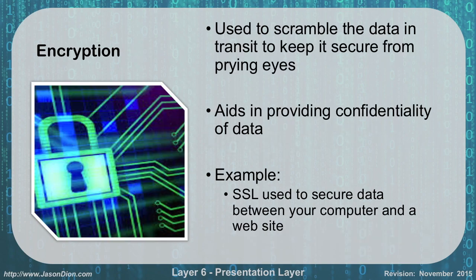The second thing that we do with layer 6 is encryption. Encryption is used to scramble our data in transit so that it is secure from anybody who's trying to pry and see it. So if we're going to go on our bank account, we want to make sure that it's using either an SSL tunnel or a TLS tunnel — secure socket layer or transport layer security — so that data is secure between my computer and the website I'm going to.